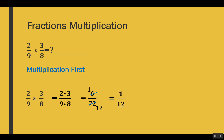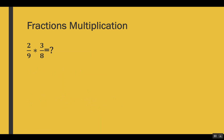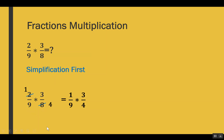Now I will explain the same example with a different method, which is simplification first. Instead of multiplying the numbers first, we try to simplify them first. In the fractions 2 out of 9 and 3 out of 8, we can simplify because 2 and 8 have the common divisor 2. So after simplifying it becomes 1 out of 9 and 3 out of 4.